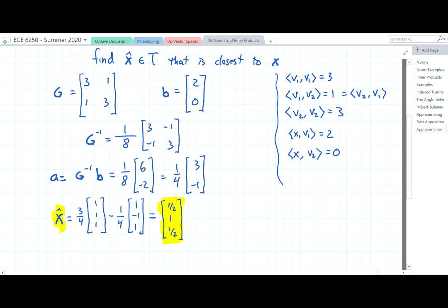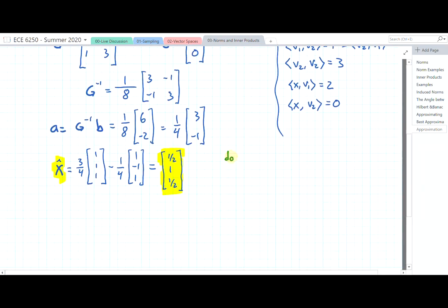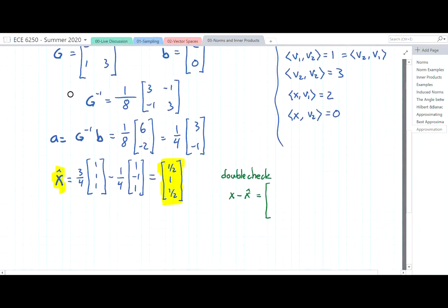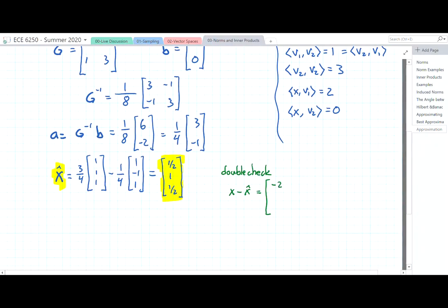To find the best approximation in this subspace. So we can double check. Always a good idea. If we have x minus x̂, x as you recall is [-2,1,3], we get -2.5, 1 minus 1 is 0, and 3 minus 1/2 is 2.5.